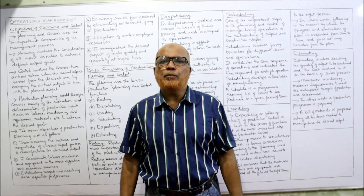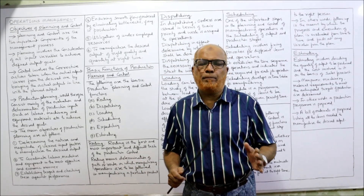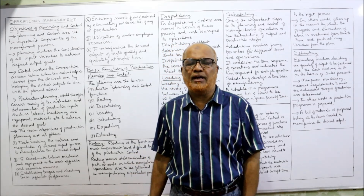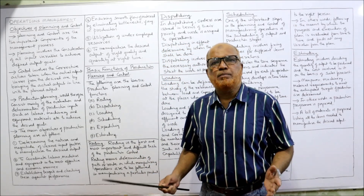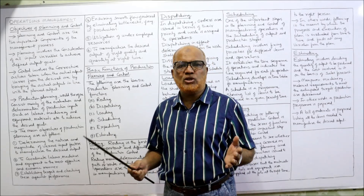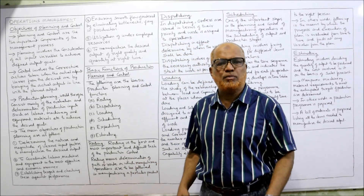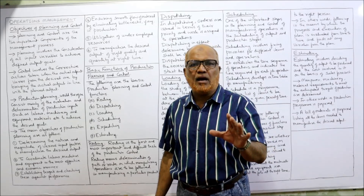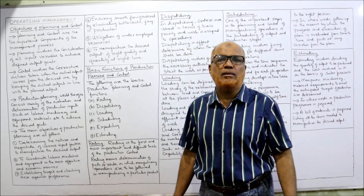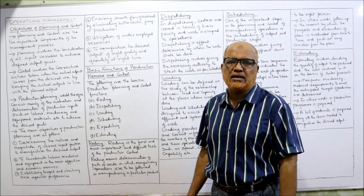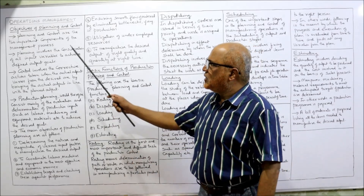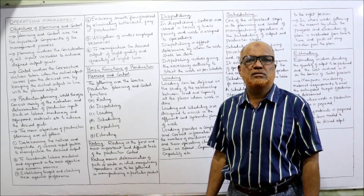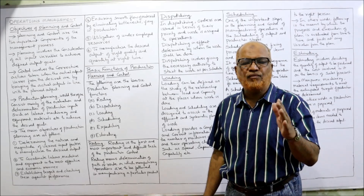Production planning and control — planning and control are the basic functions of any management, whether it is production management, finance management, purchase management, or marketing management. For all management areas, planning and control are the basic activities of any department, and they are the important components of the management process.